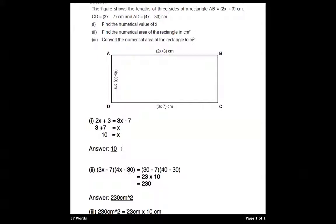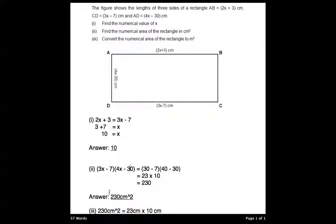And then I will substitute the 3x with 10 because I want to find the numerical value. So x equals 10 and 3x equals 30. It's like 10 times 3 equals 30, and then 10 times 4 equals 40. So it's 30 minus 7 times 40 minus 30, which equals 23 times 10, which is also 230 cm squared. So now I get the numerical area of the rectangle in cm squared, which is 230 cm squared.